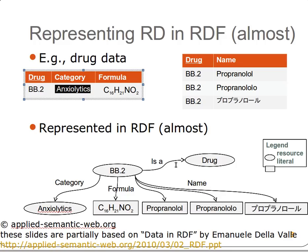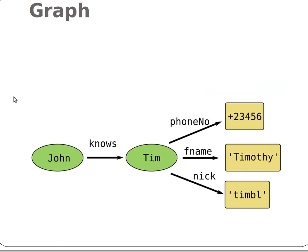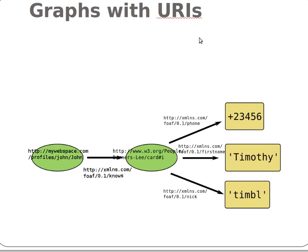RDF data is a graph. We have a vertex, a vertex, and an edge — vertex, vertex, edge, and so on. In our graph, the subject and the object are vertices, and the property is an edge. So a triple is: subject, property, object — or node, edge, node — where nodes are also called vertices, as we've seen before.